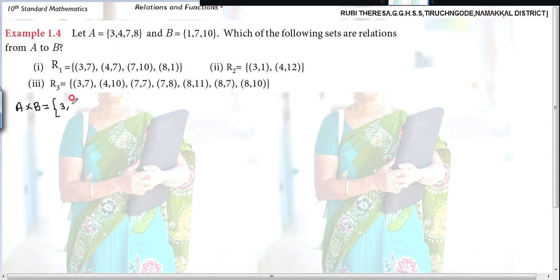So first you write A: 3, 4, 7, 8. Then B: 1, 7, 10. What are the ordered pairs you will get? First 3 is paired with 1, 7 and 10. So 3,1, 3,7, 3,10.